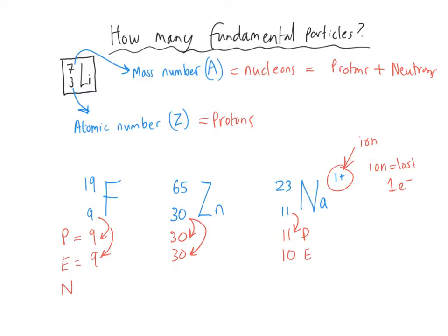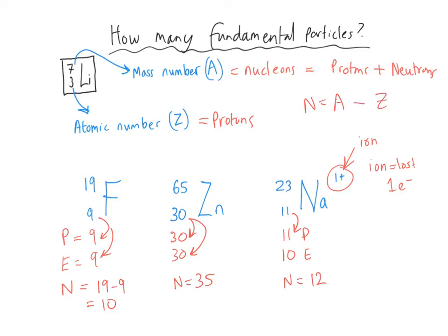For neutrons: the number of neutrons is the mass number minus the atomic number. Fluorine has 19 minus 9 equals 10 neutrons. Zinc has 65 minus 30 equals 35 neutrons. Sodium has 23 minus 11 equals 12 neutrons. So neutrons equals the big number take away the small number.